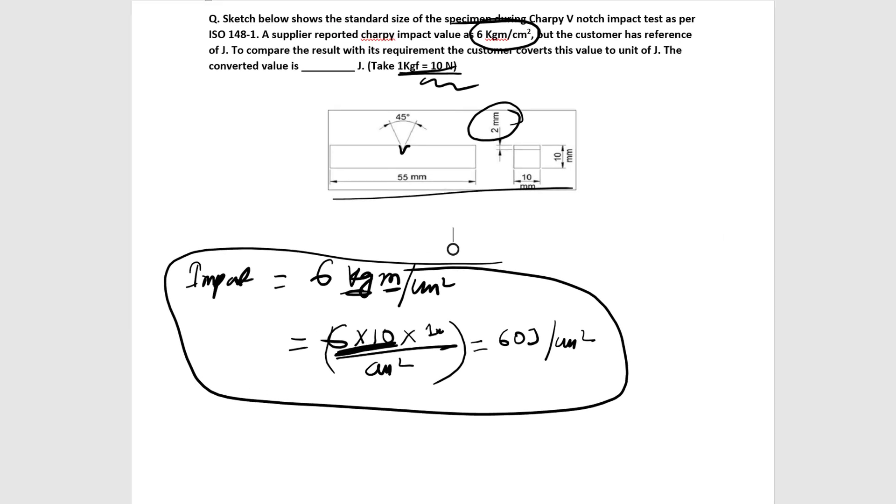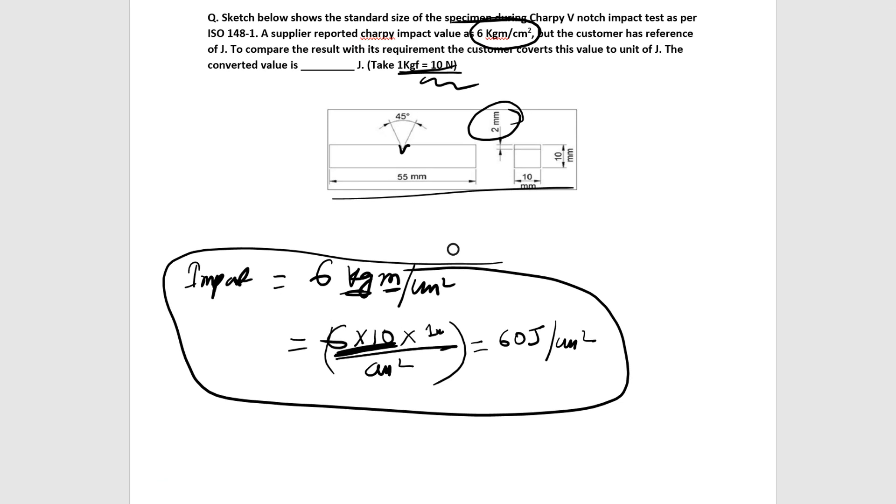So what is the meaning of this value when we find it in Joule per centimeter square? It gives the amount of energy absorbed per cross-sectional area.